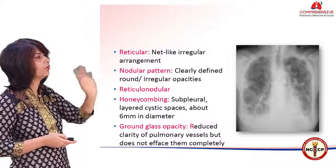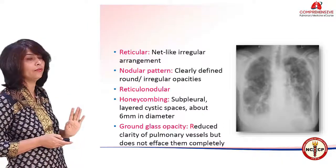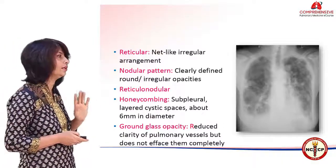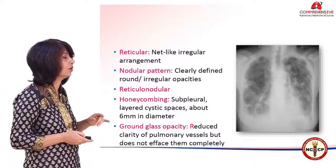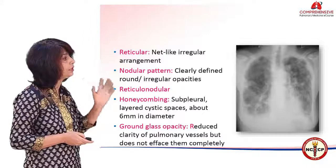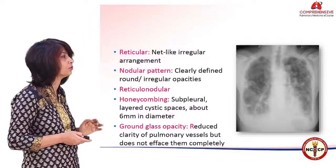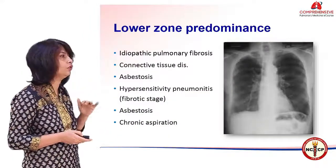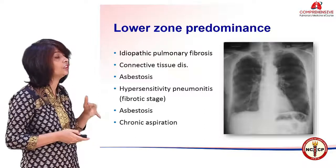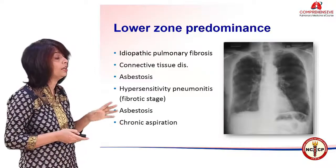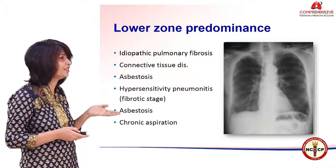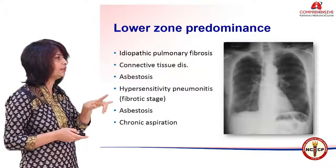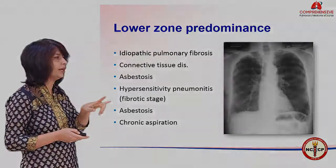If you clearly see honeycombing or ground glass opacity — we already discussed ground glass opacity with consolidation — it will come up again in interstitial disease and in airspace disease as well. If we have lower zone dominant disease, first and foremost ask: is there a disease at all? You compare and assess the CP angle.